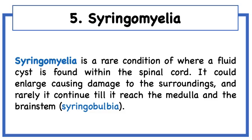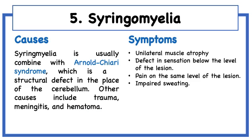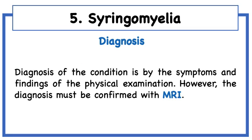Fifth, Syringomyelia, which is a rare condition where a cyst is present within the spinal cord containing fluid, causing some disturbance in neural functions. The condition mostly occurs accompanied with Arnold-Chiari syndrome and symptoms depend on the site of the cyst. Diagnosis is by clinical presentation but must be confirmed with MRI scan to show the cyst, and treatment is by removal of it.